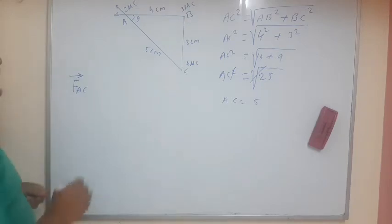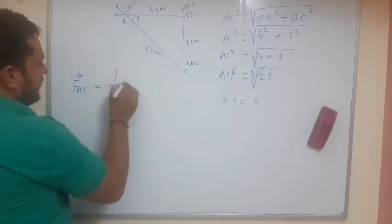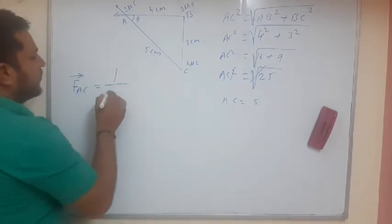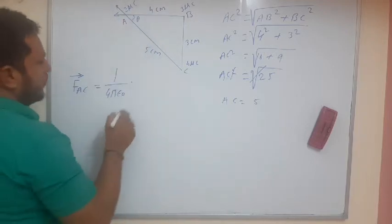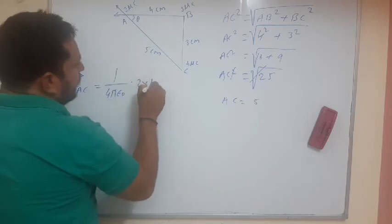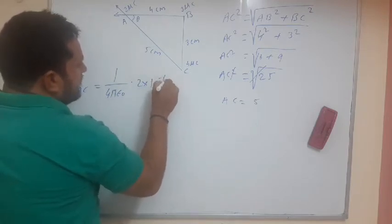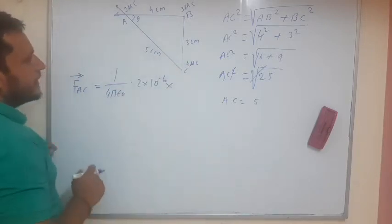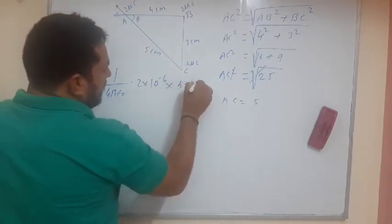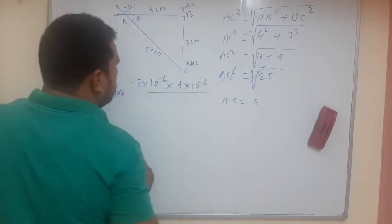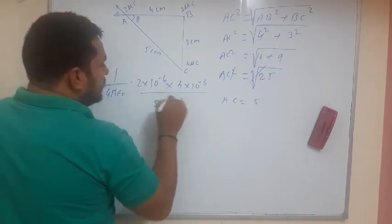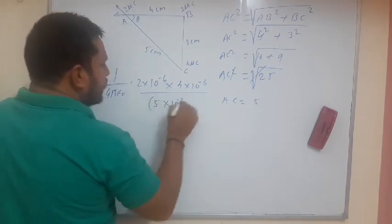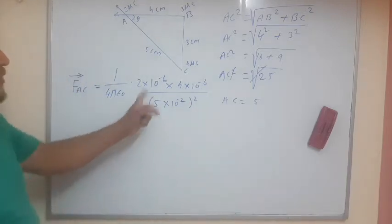Now here take these values. We know the first part of this equation is what? Coulomb's constant that is 1 upon 4 pi epsilon 0 into what? 2 micro coulomb that is 2 into 10 raise to minus 6 into what? That is 4 into 10 raise to minus 6 upon this distance between them that is 5 into what? 10 raise to minus 2 whole square. 10 raise to minus 2 whole square.